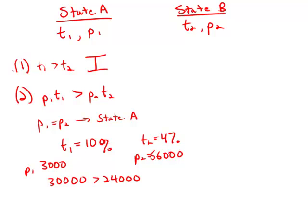But if it costs $6,000 in state B and only $3,000 in state A, of course it's going to be more expensive. Even with less tax added on, it's still going to be more expensive in state B.